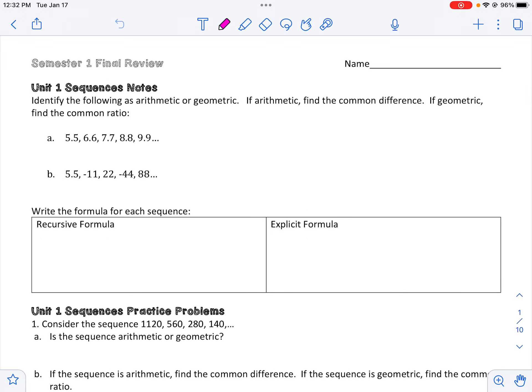In unit 1, we looked at sequences. So one of the first things that we looked at was, if I give you a list of numbers, can you figure out is it arithmetic or geometric?